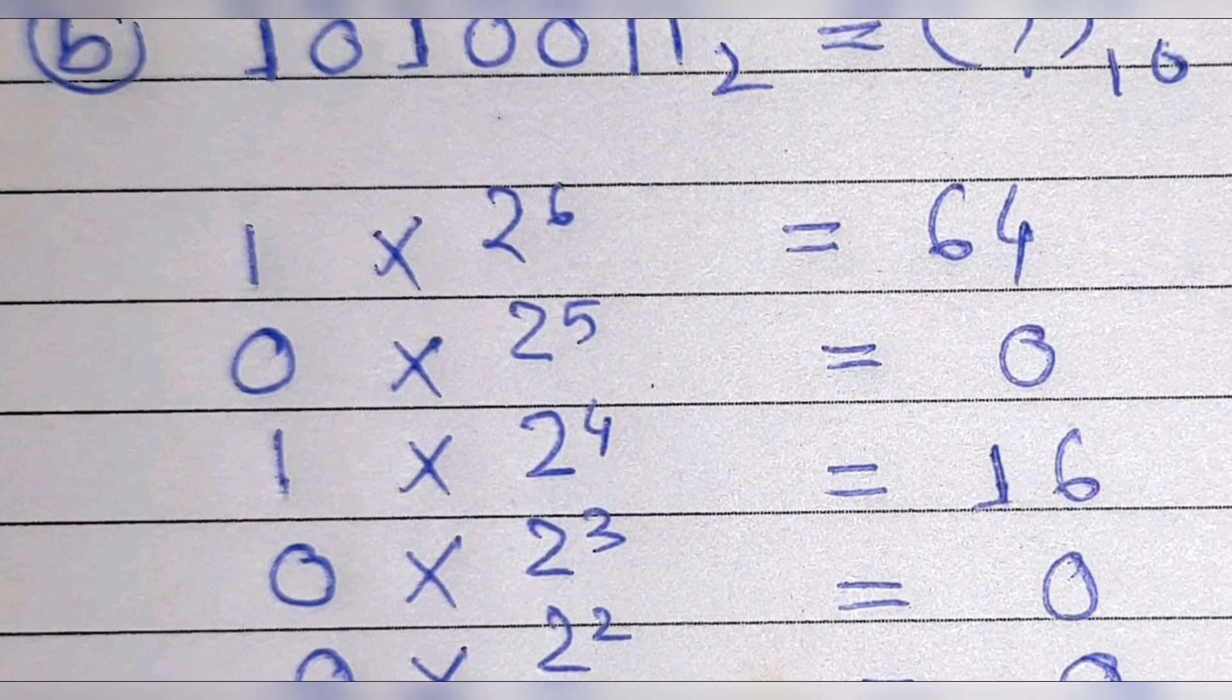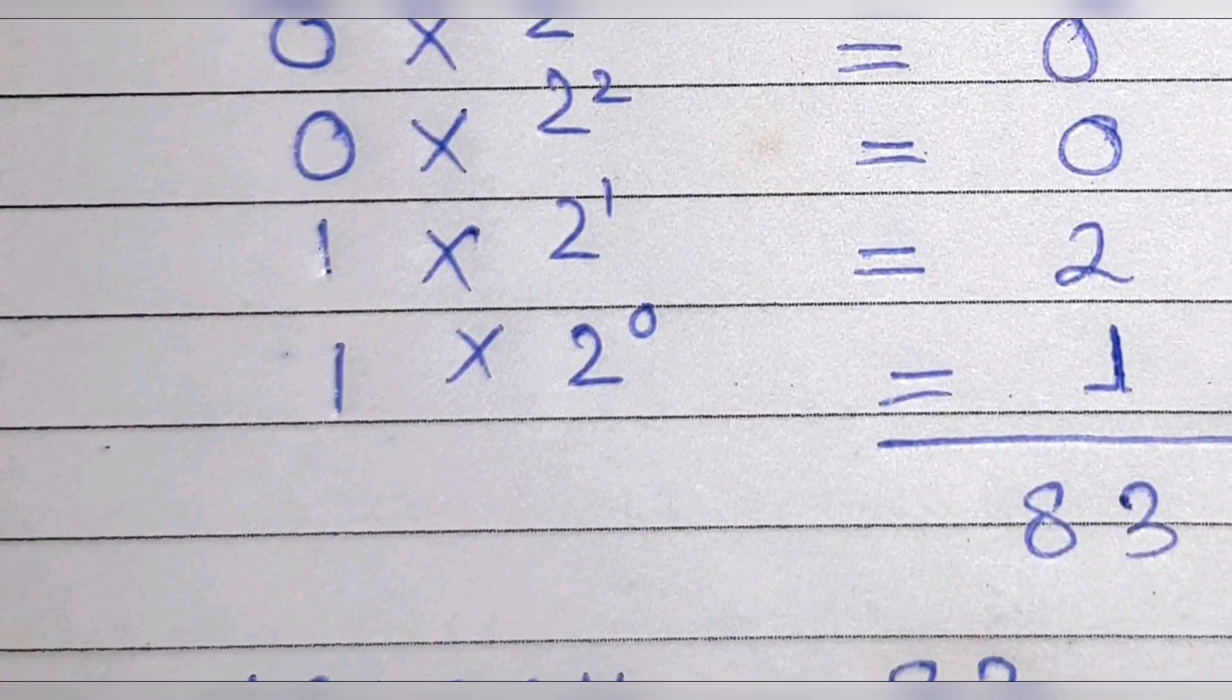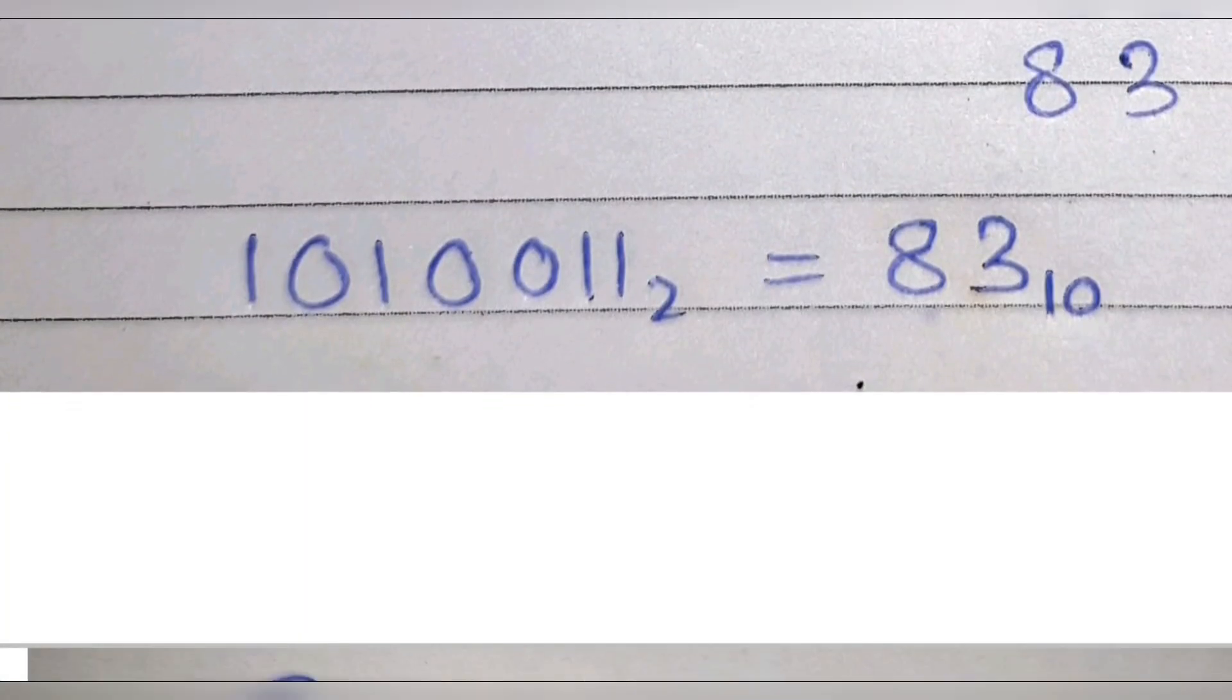One into 64 will be 64 only, and here as it is multiplied by zero, any number if you multiply with zero will get zero, so we are not counting this one. After that, adding up all the numbers we'll get the answer is 83.